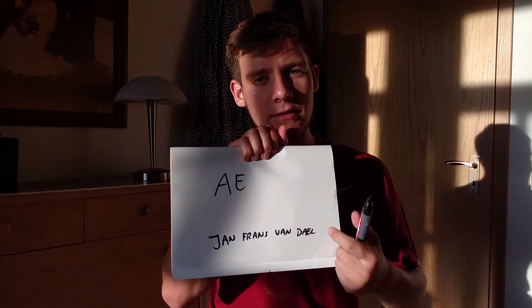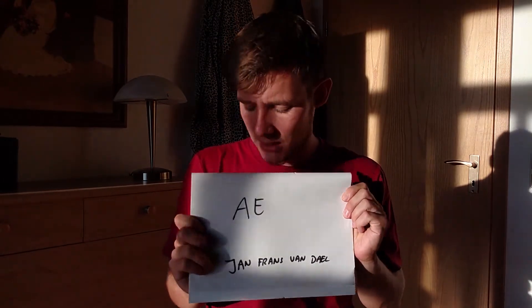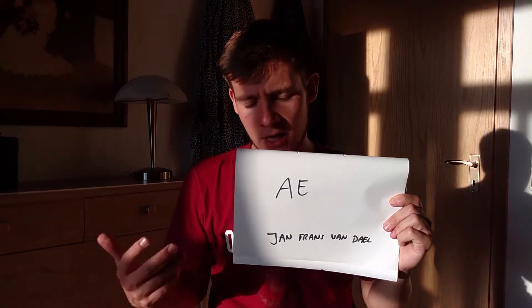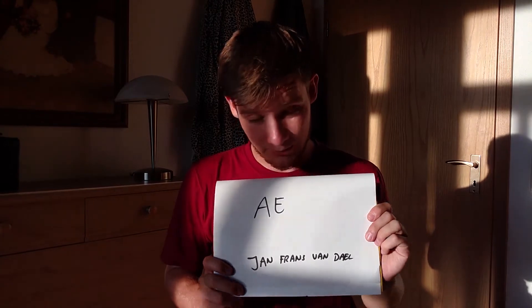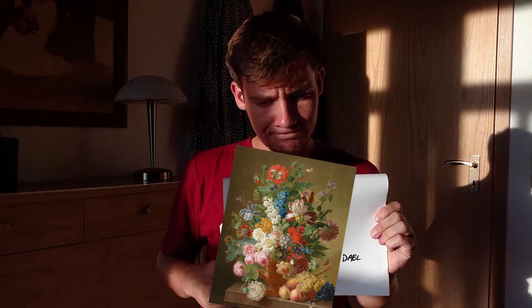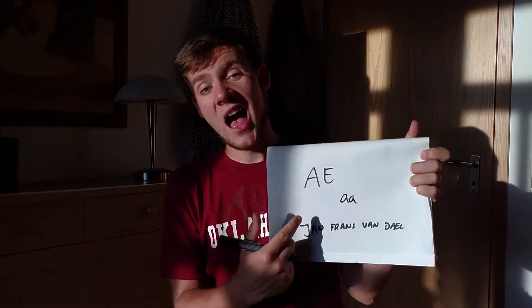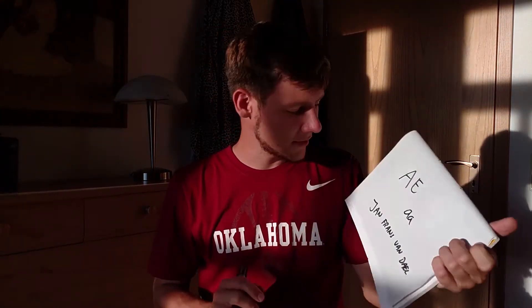The first combination is ae. You might think it's A-E, but ae is an old combination that we don't use actively anymore in Dutch. You might still find it in some names, especially in Flanders — Flemish Dutch. For example, Jan-Frans van Dael, who painted this thing — beautiful flowers. That's all you need to know about ae; you just pronounce it as 'ah.' It's pretty simple.